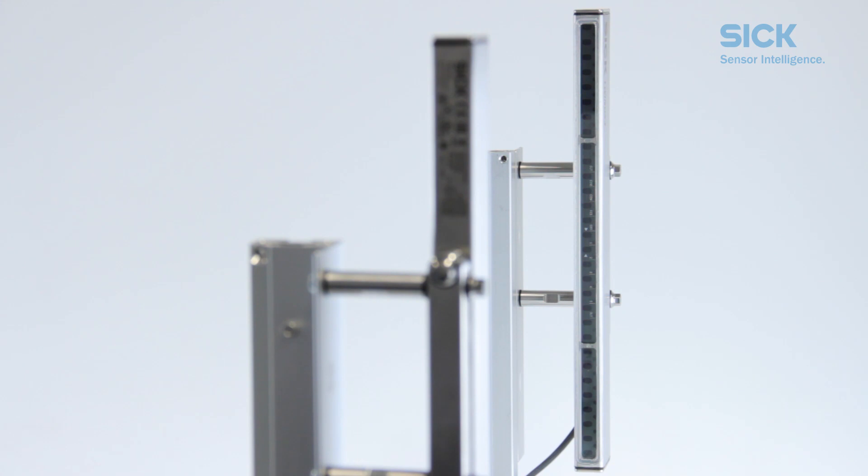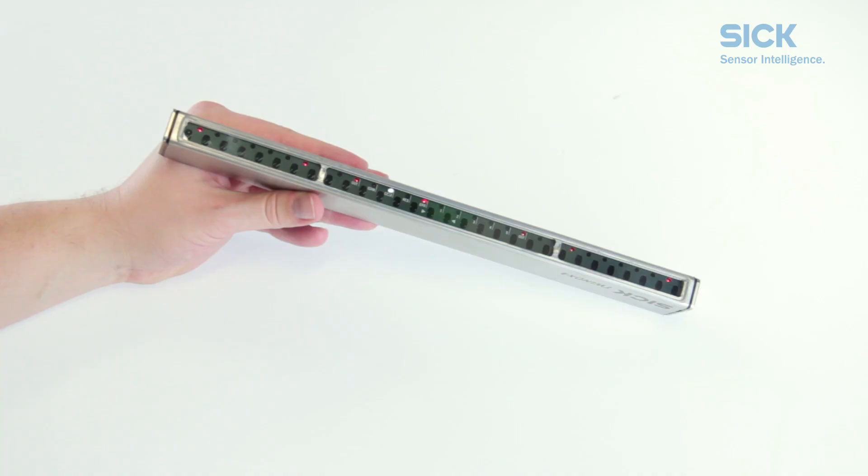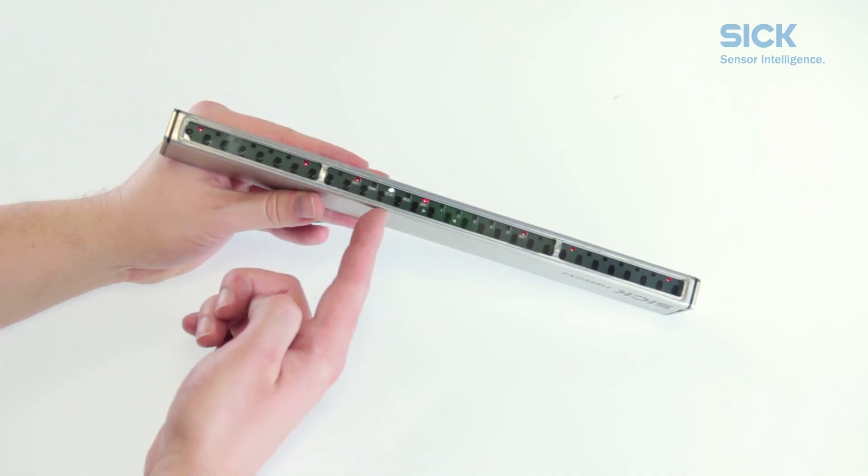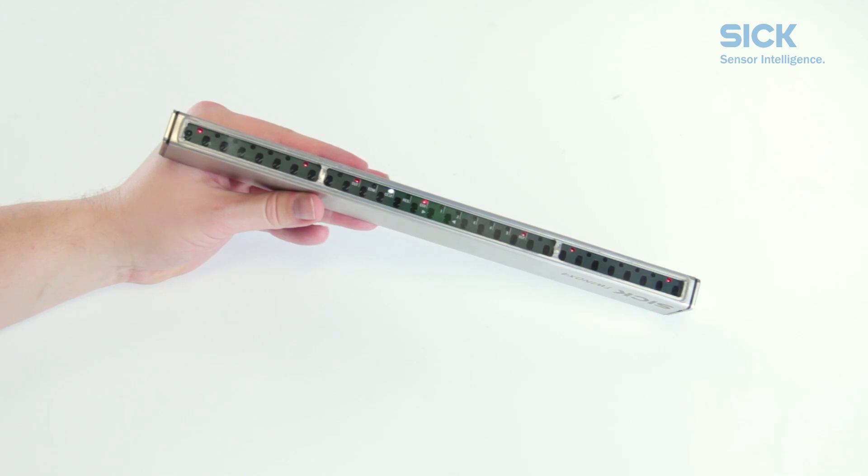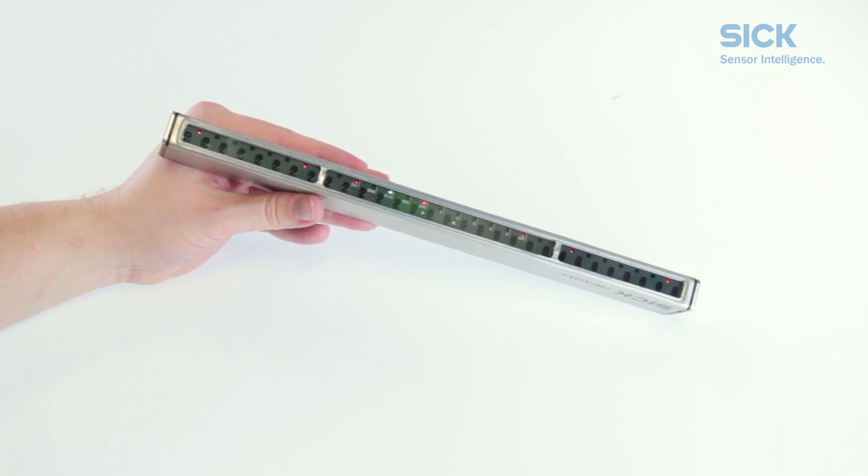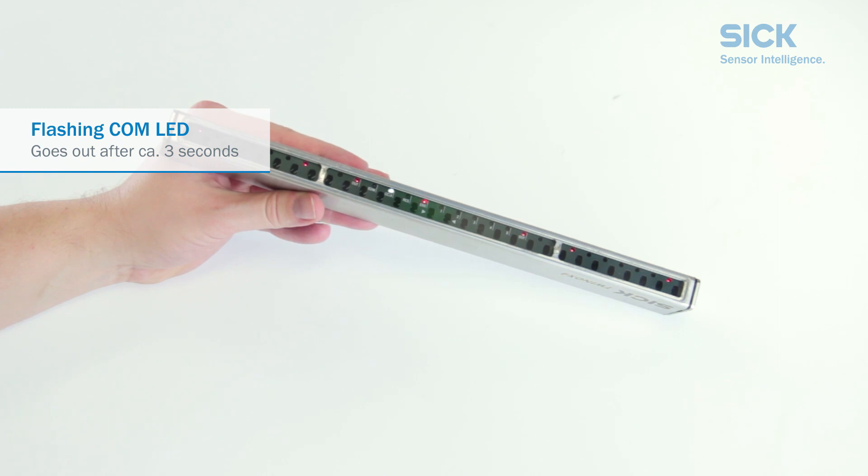As a first step, switch on the power supply for the safety light curtain. Note that the COM LEDs on both sticks start to flash white immediately. This signals the first ever synchronization between this pair of twin sticks. In other words, this safety light curtain is still in factory settings.